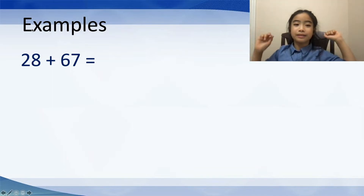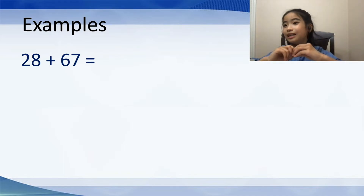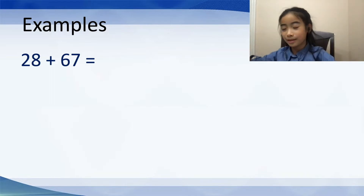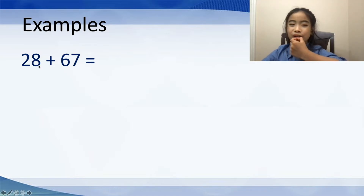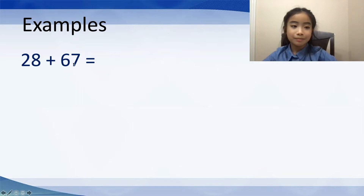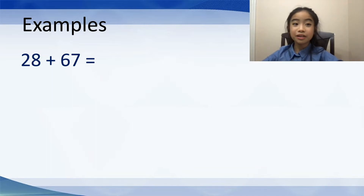Now let's look at examples. For these examples, you do not calculate the exact answer — you just figure out whether the answer is even or odd, using this mirror method. First, we have 28 plus 67. 28 is an even number, so imagine that 28 was looking in the mirror and it saw 67 inside the mirror. 28 is even and 67 is an odd number. Since it sees a different number in the mirror, the result is odd.